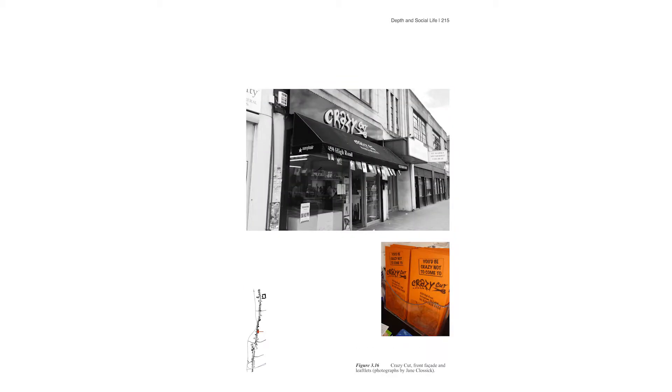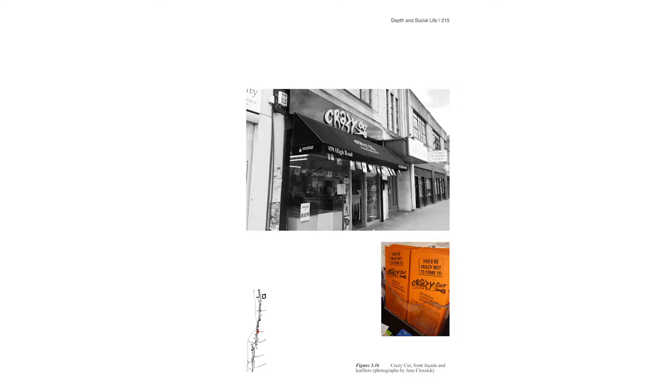Crazy Cut was one of the shops I drew in great detail. I spent a lot of time there — I had my hair cut, my legs waxed, and chatted with the owner, Oya. The front of Crazy Cut shows a standard high road shop configuration with a sign Oya was extremely proud of, a sunshade, and a colour scheme she specifically organized to present what she called a 'European hairdresser' — this in the context of Tottenham, where there are many Afro-Caribbean hairdressers.